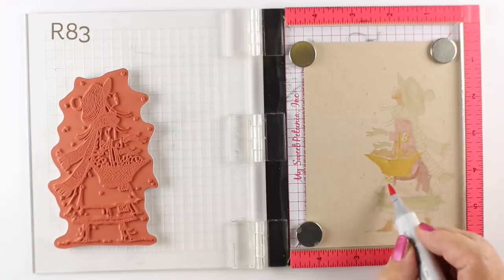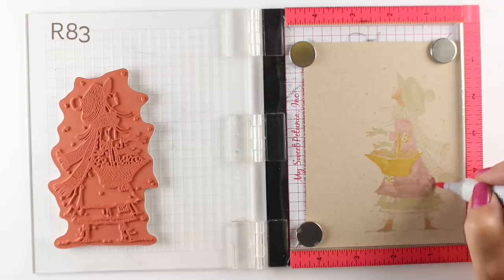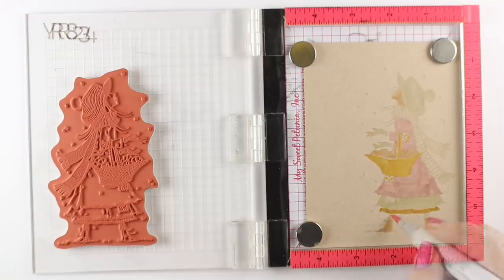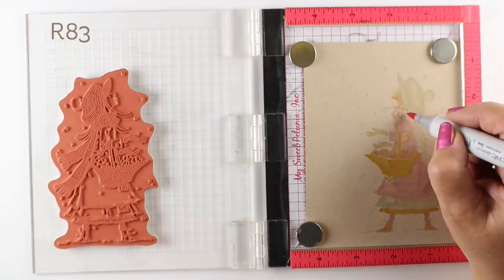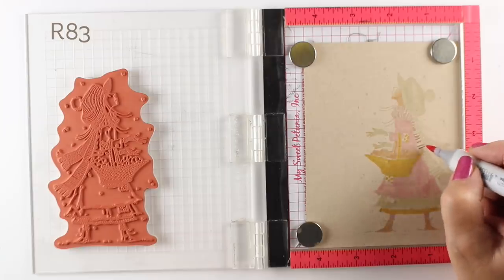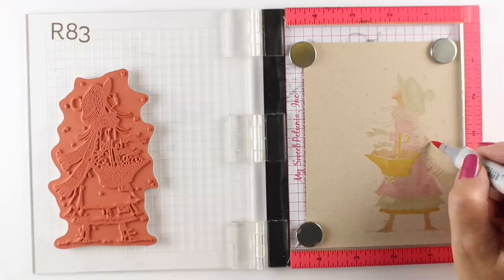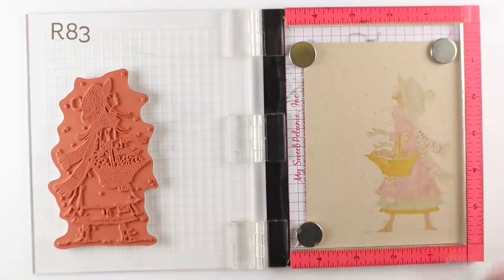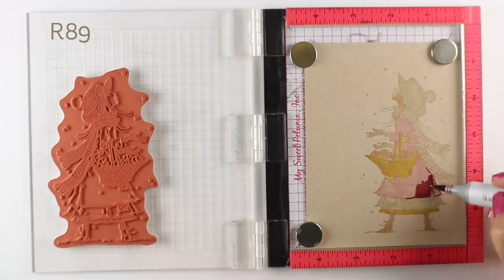In coloring on this paper, you can actually really experiment with getting super dark with colors because you have that strong contrast that you need to create. You can get a lot darker and not feel like you're overdoing it like you can sometimes on white cardstock. I wanted to keep this in a Christmassy kind of look, so I've chosen some reds and greens, but I'm using all desaturated ones because I wanted it to feel kind of vintage, kind of antiquey. So I'm using the R80s for the reds and the YG90s for the greens so that I end up with some really desaturated, grayed-out kind of colors.